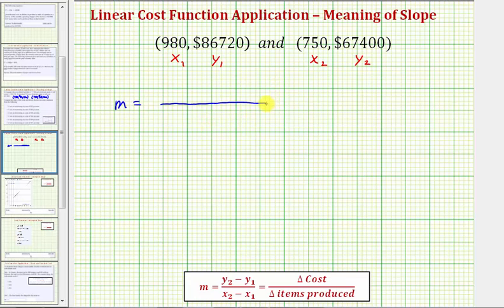the change in cost, which would be 67,400 - 86,720, divided by the change in the number of items, which would be 750 - 980. The difference in the numerator is -19,320. The difference in the denominator is -230.